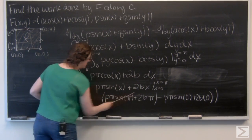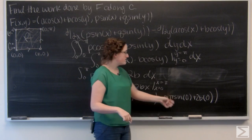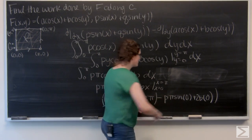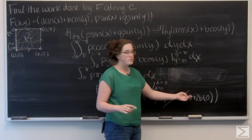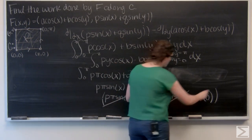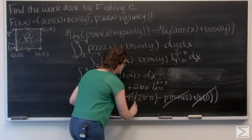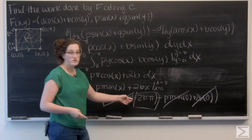Now I'll just go ahead and evaluate these. Sine of π is going to be 0. So this term cancels out. Sine of 0 is also 0. So this term cancels out. And obviously 2B times 0 is just going to be 0. So all I'm left with is 2Bπ.